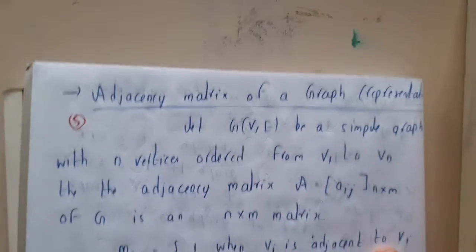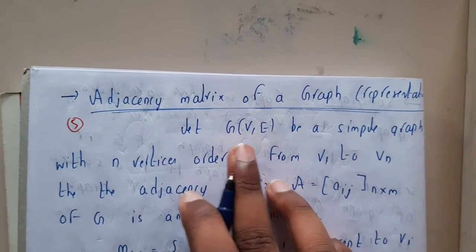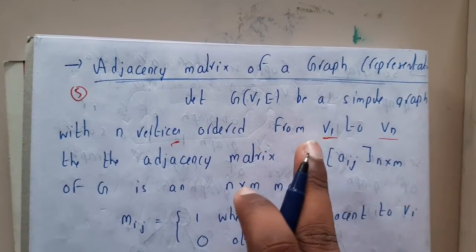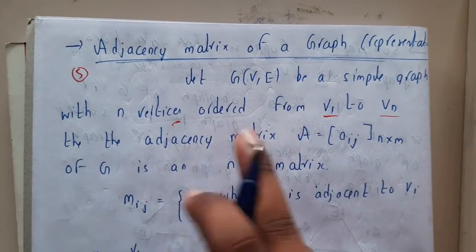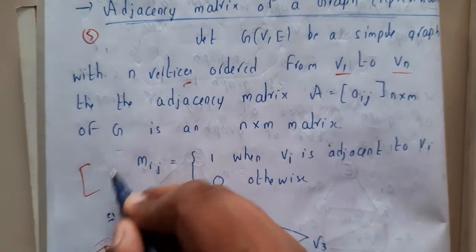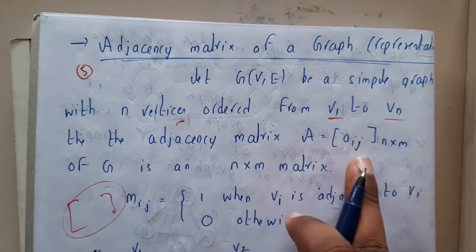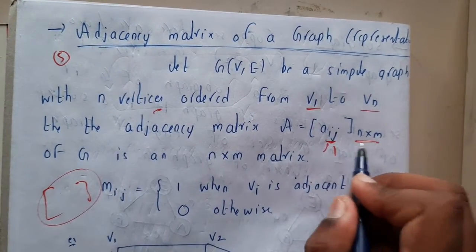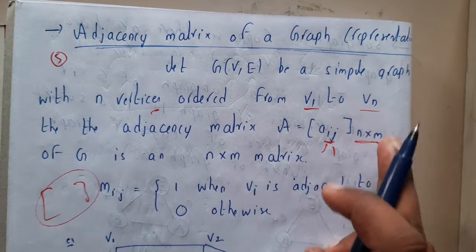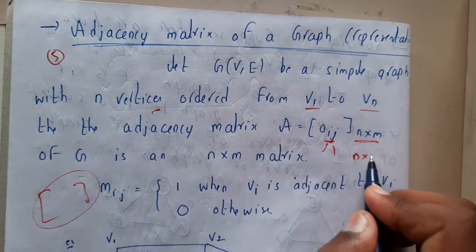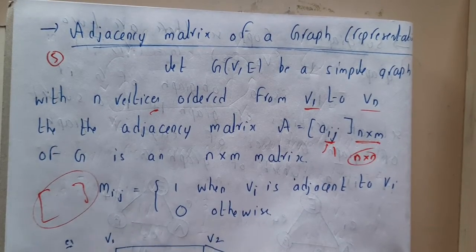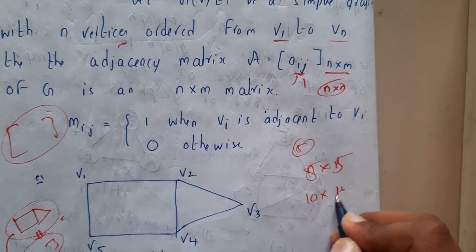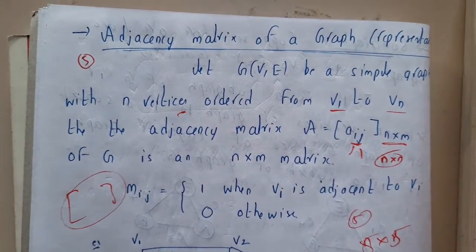Let the graph G(V, E) be a simple graph with n vertices, ordered from v1 to vn. When you represent it in a matrix format, A is defined as A[i][j], where i and j indicate the position. The size of the matrix is n×n, because it is the combination of vertices. If the number of vertices is 5, you will have a 5×5 matrix; if 10, then a 10×10 matrix.